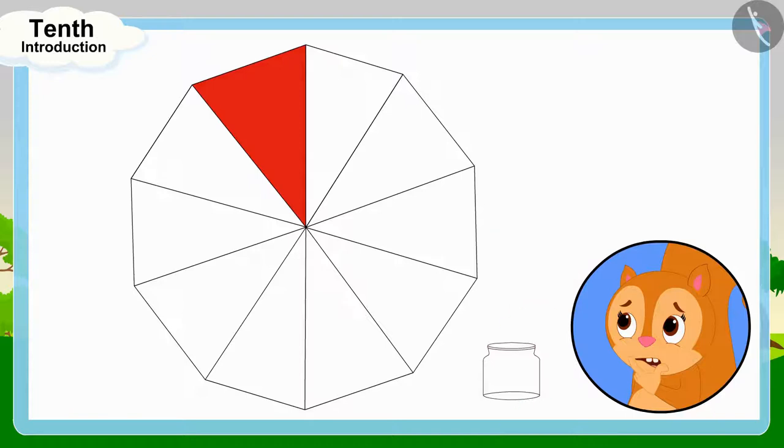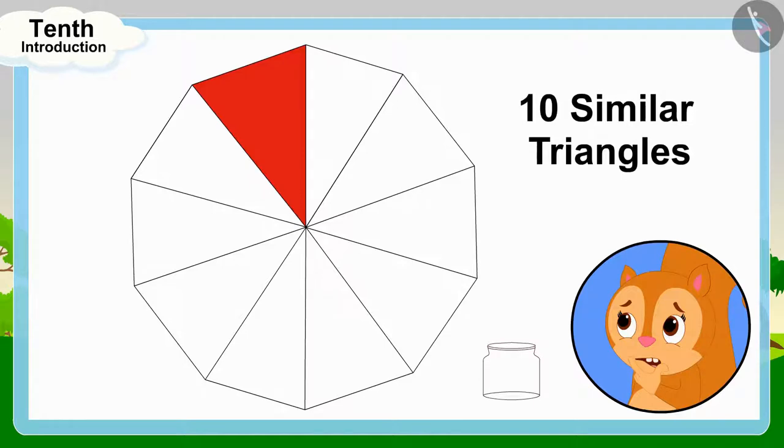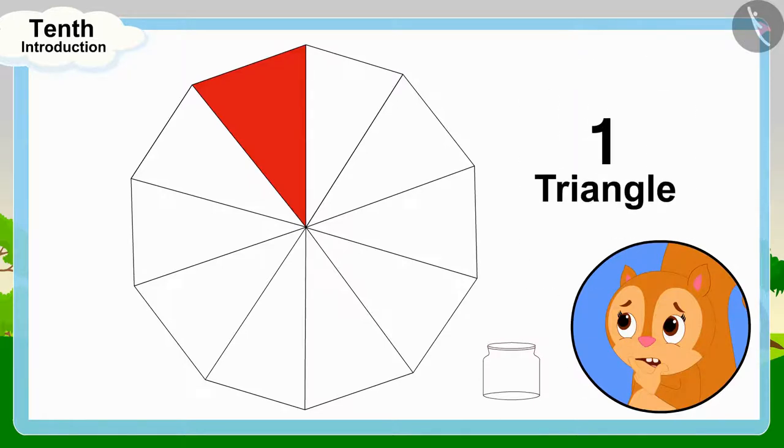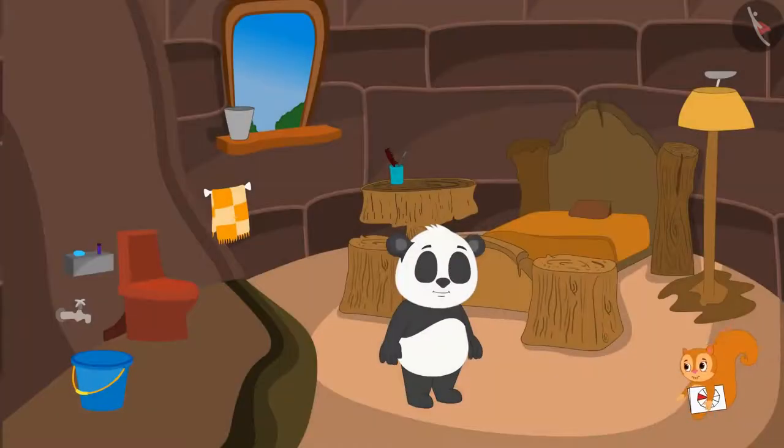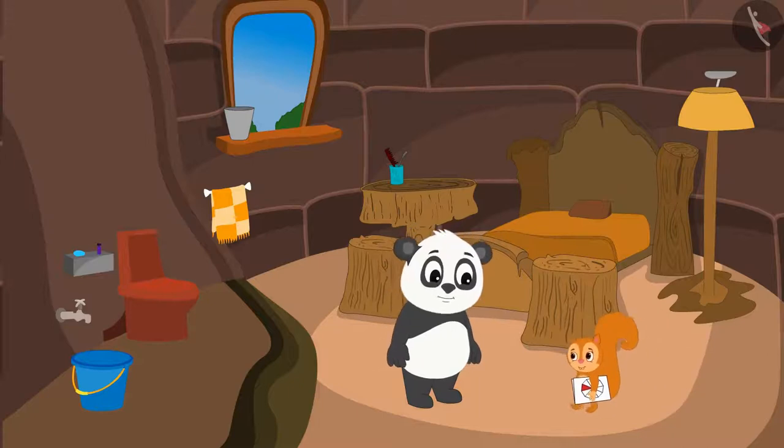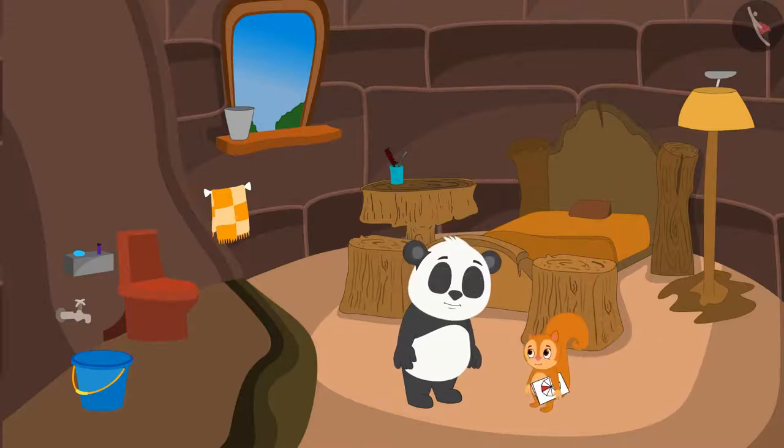This flower is made up of 10 similar triangles and Chanda has colored one of these triangles. This means Chanda has filled red color in one tenth part of the flower. Chanda immediately took her unfinished greeting card and reached her friend Golu's house.